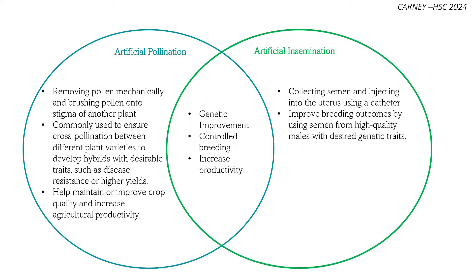Artificial pollination is used with plant varieties to create hybrids and help maintain or improve crop quality. In terms of similarities, both result in genetic improvement — the selection of male donors or pollen sources is chosen to introduce desired characteristics into the breeding population. Both are forms of controlled breeding and both can increase the productivity of livestock and crops.